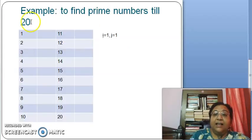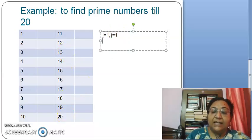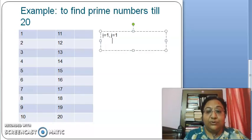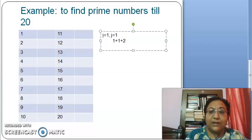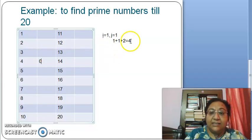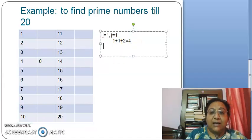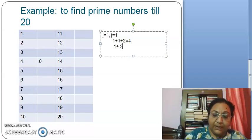Let us find all prime numbers up to 20. Both i and j start from 1. When i=1 and j=1: 1 plus 1 plus 2 times 1 times 1 equals 4. We mark the number 4. Then we increment j by 1, so j=2: 1 plus 2 plus 2 times 1 times 2 equals 7. We mark the number 7.